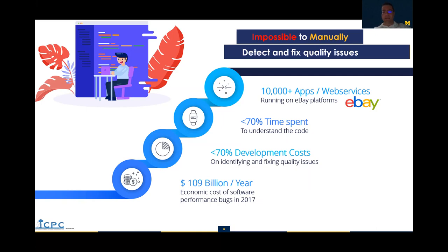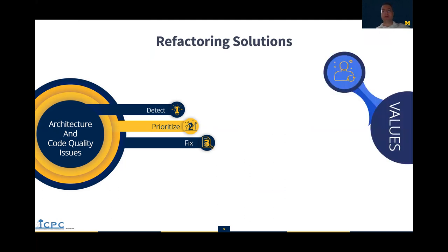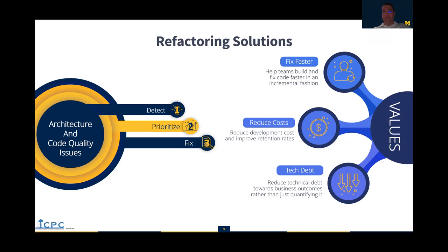The cost increase makes it impossible to manually detect and fix all quality issues. For example, one of our partners, eBay, has over 10,000 apps and services running at the back end of ebay.com. That's why automating refactoring is very important — including detection of quality issues, their prioritization, and providing semi-automated solutions to fix them. This can bring a lot of value in terms of fixing code faster, reducing development costs, reducing technical debt, and focusing more on functional improvements.